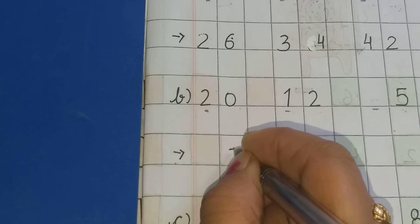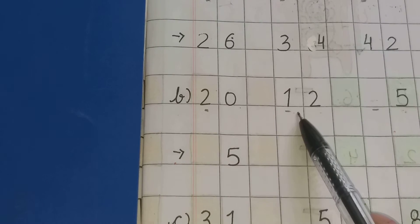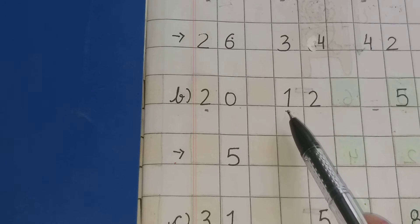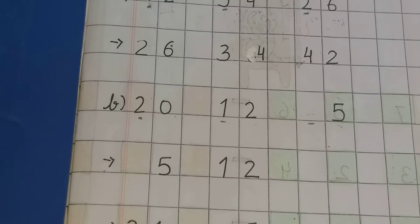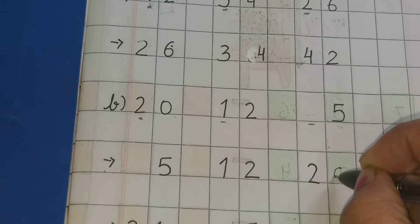और यहाँ क्या है? कुछ नहीं — means 0. आप समझ सकते हैं: जहाँ कुछ नहीं है, वहाँ 0 है. So आप arrange करेंगे — सबसे पहले कौन सा number आएगा? Number 5 — smallest number, because it is a single digit number. Now, आप यह given 2 digit numbers को compare करेंगे — 2 और 1 में which one is smallest? 1 is smallest. So number 1, 2 — 12, हम लिखेंगे 5 के बाद. And after 12, आप क्या mention करेंगे? 2, 0 — 20.